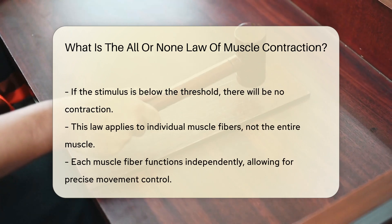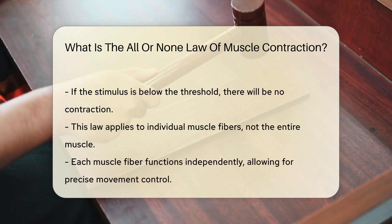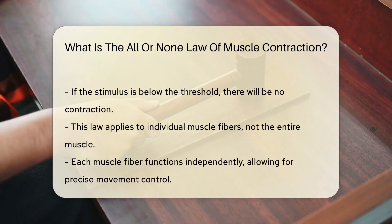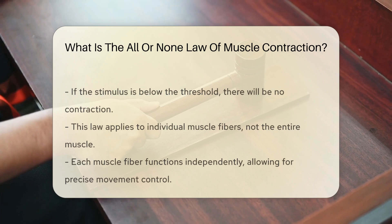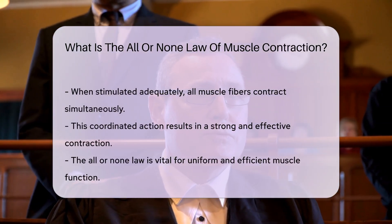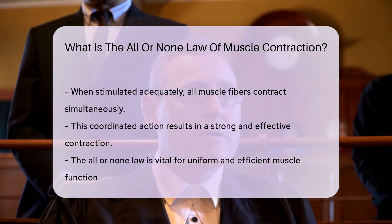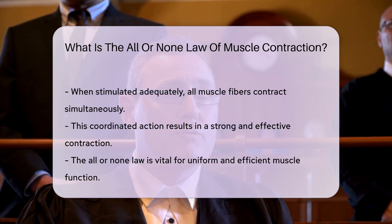This principle applies to individual muscle fibers rather than the entire muscle. Each fiber operates independently, allowing for precise control of movement. When a muscle is stimulated, all of its fibers respond simultaneously if the stimulus is sufficient. This coordinated action produces a strong and effective contraction.